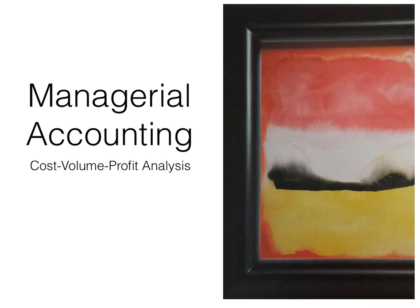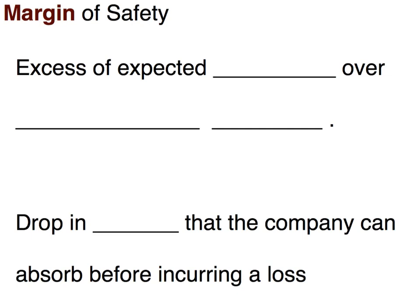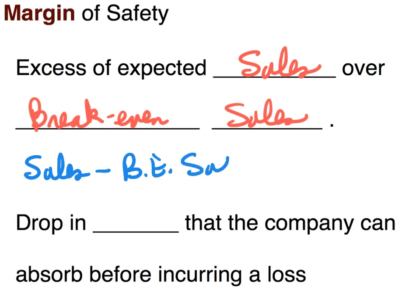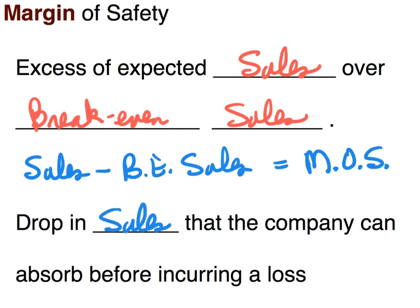Greetings everyone. In this video on cost volume profit analysis, we're going to be specifically talking about margin of safety. Margin of safety is the excess of expected sales over break-even sales. We can create an equation: sales minus break-even sales equals margin of safety. In other words, it's the amount that our sales can drop before we begin to incur a loss — essentially, how safe are we?